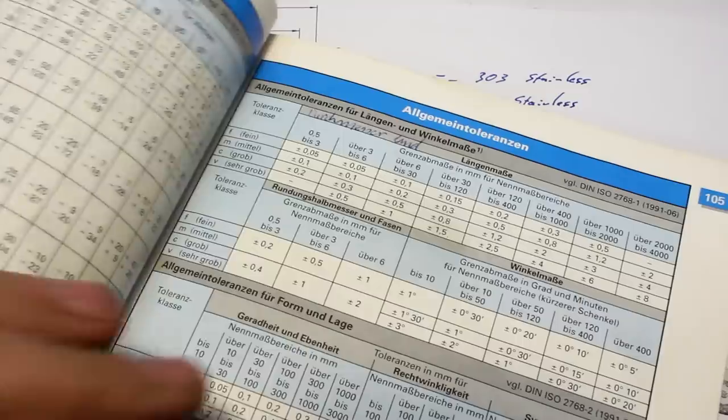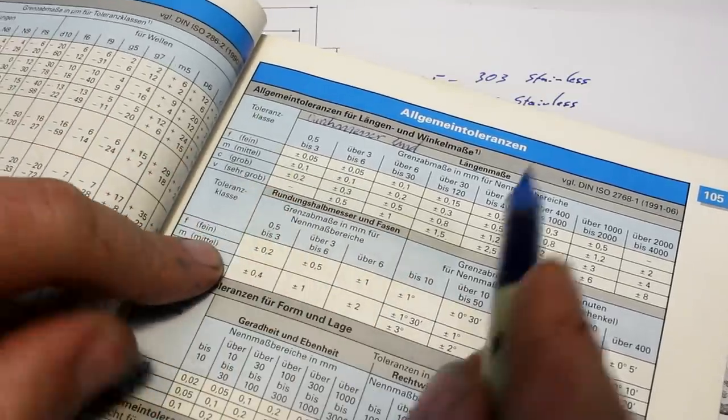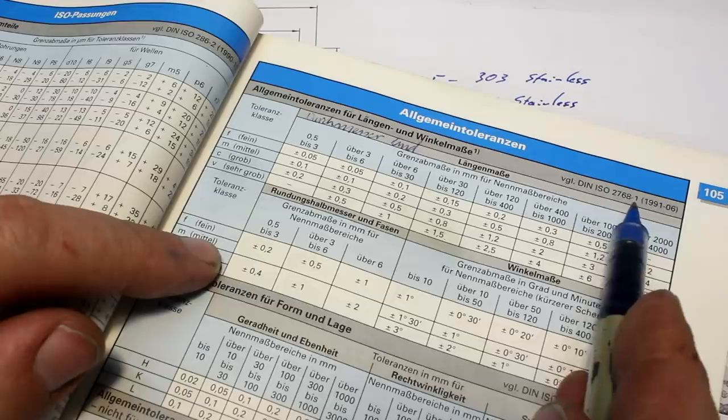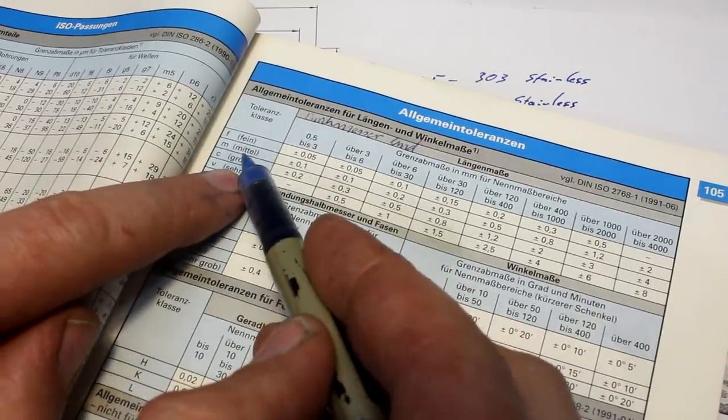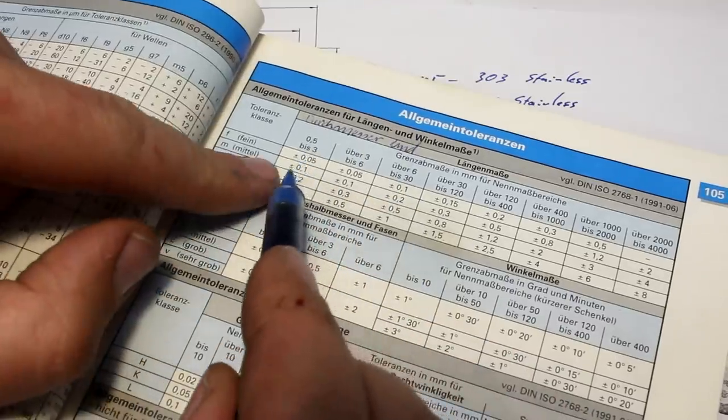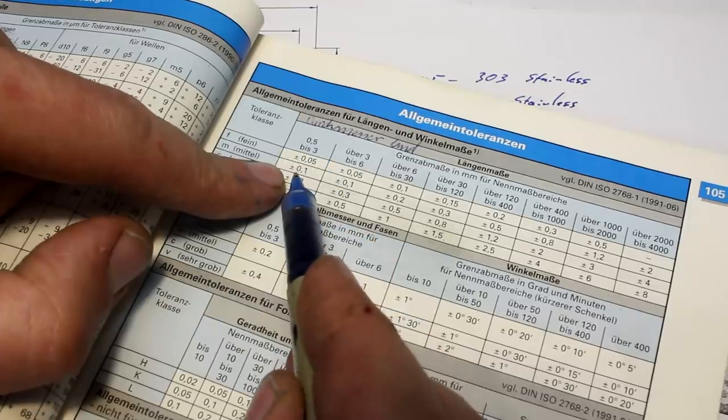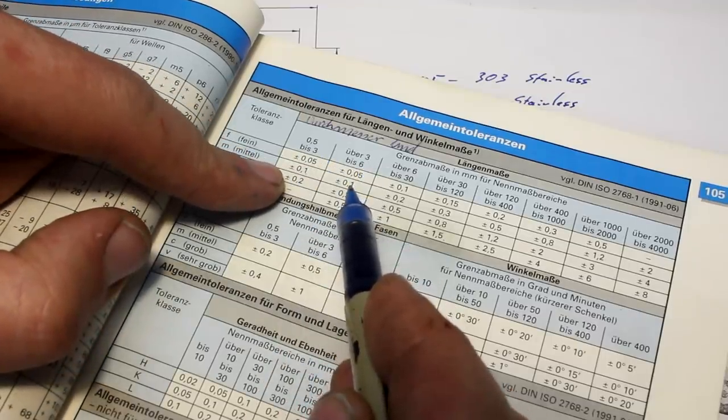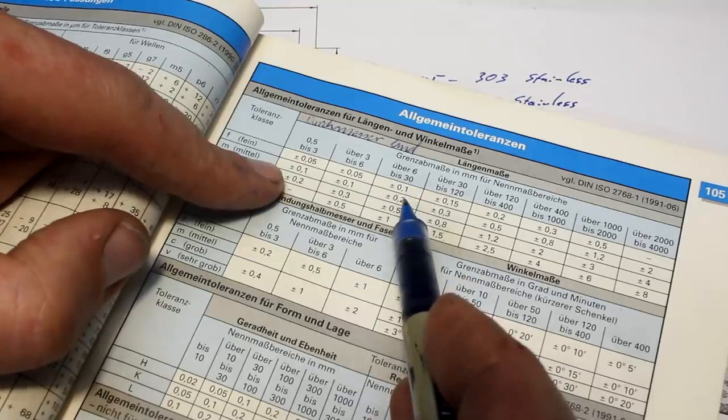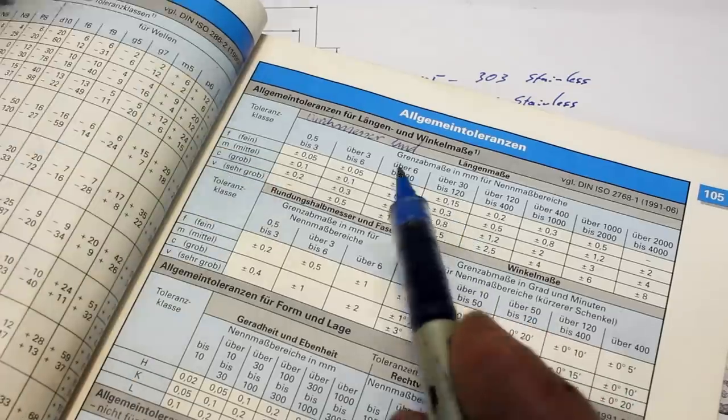You take your trusty Tabellenbuch metal and you look up here, ISO 2768-1. Tolerance class M for middle or medium. A dimension 0.5 to 3 can be plus minus 0.1. 3 to 6mm can be plus minus 0.1. 6 to 30 can already be plus minus 0.2. 30 to 120 can be plus minus 0.3.